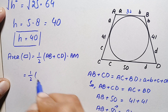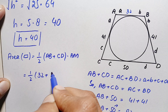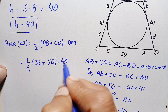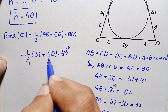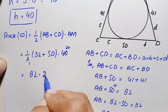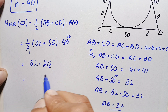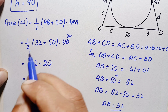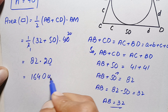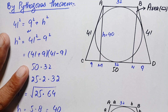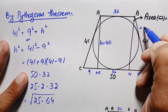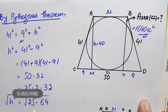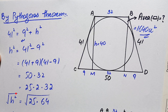Substituting: Area = ½ × (32 + 50) × 40 = ½ × 82 × 40 = 82 × 20 = 1640. Therefore the area of trapezoid ABCD is 1640 square units — that is our final answer. Don't forget to subscribe to my YouTube channel for more interesting step-by-step geometry solutions. Thanks for watching.